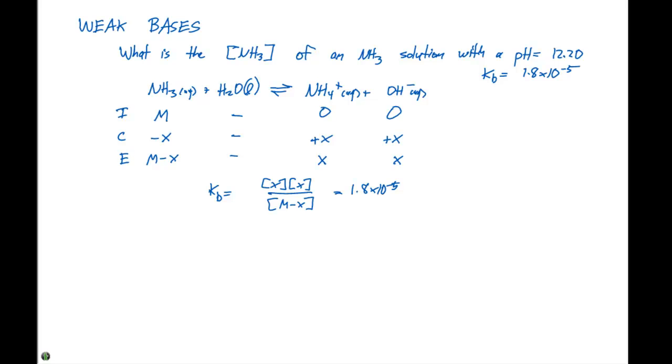Our pH is equal to 12.20, which means our pOH is gonna equal 14 minus 12.20, which is equal to 1.80.